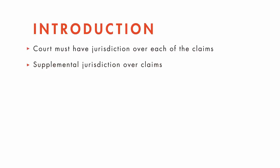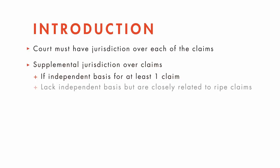Supplemental jurisdiction is a way for plaintiffs to shoehorn as many separate claims as possible into one federal lawsuit, even if there is not an independent basis for federal subject matter jurisdiction over all of them. So long as, one, there is an independent basis for federal jurisdiction over at least one of them, and two, the claims that do not have an independent basis for subject matter jurisdiction have a sufficiently close factual relationship with those that do have an independent basis for jurisdiction.